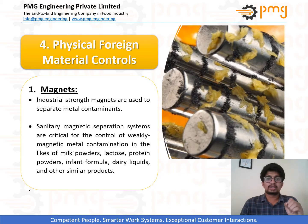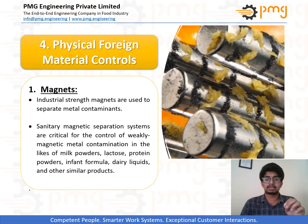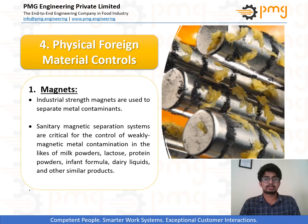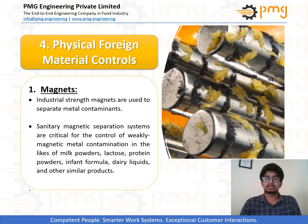Now let us discuss about hazards. First we will discuss physical hazards or physical contaminants. Physical contaminants are common in food industry, such as pebbles, foreign substances, dust, husk, etc. The major controls used for physical foreign materials are magnet traps, sieves and screens, and metal detectors.